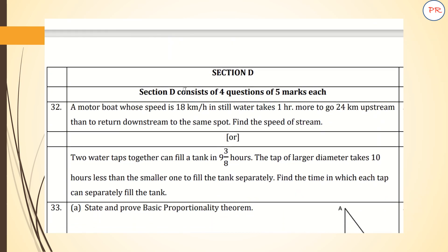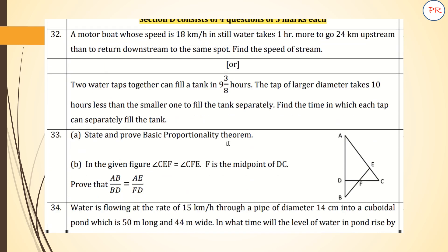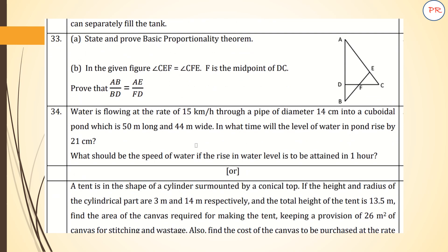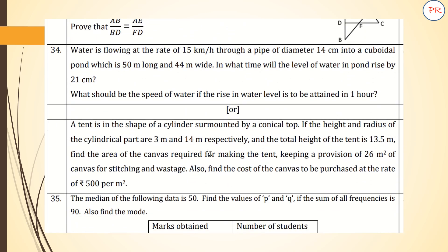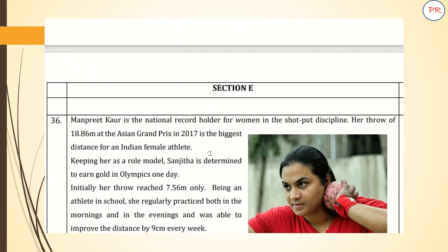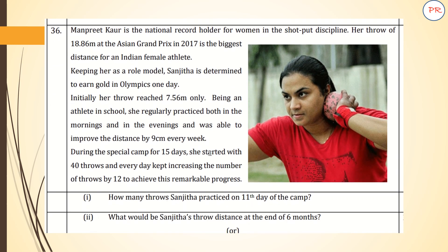Section D consists of four questions of five marks each. Question 32 is from linear equations with two variables, so you can understand what kind of questions are likely to be asked. Question 32 also covers similarity. In question 33, an OR option is provided.